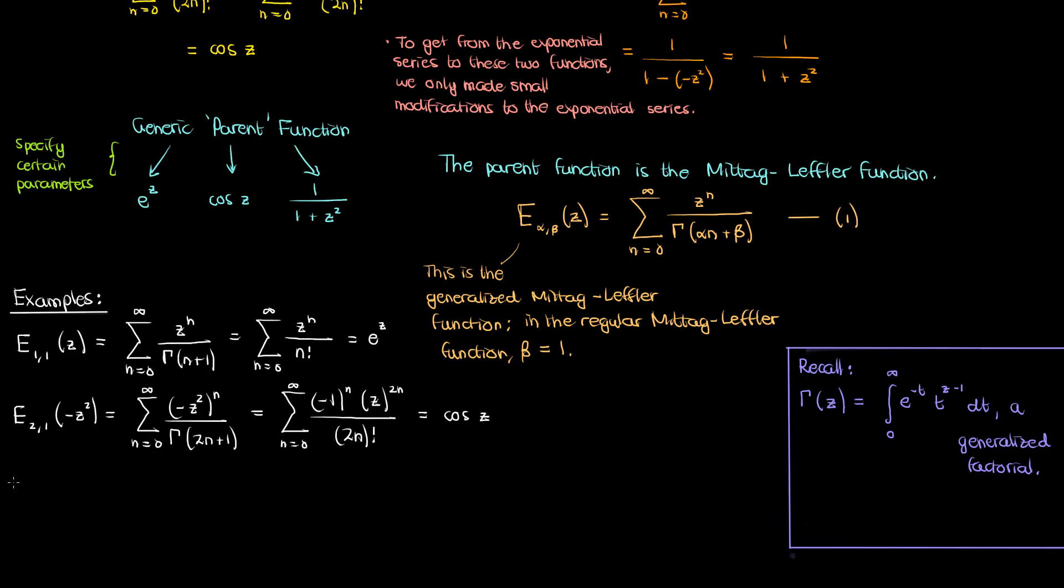Let's do a third example, the Mittag-Leffler function of z for alpha 0 and beta 1, which becomes the following. Now gamma of 1 is the same as 0 factorial, which is just 1, so we have the sum over n from 0 to infinity of z to the n, and if the absolute value of z is less than 1 then this infinite sum is just 1 over 1 minus z, using the formula for the infinite sum of a geometric series.